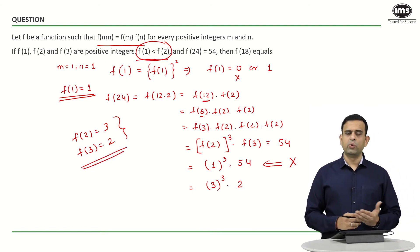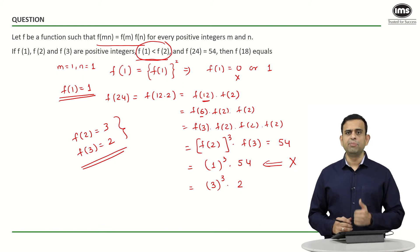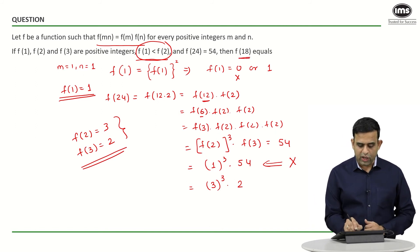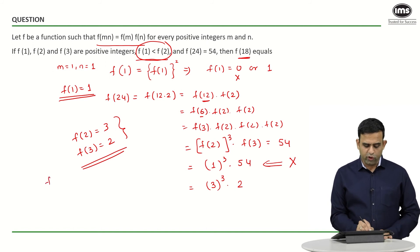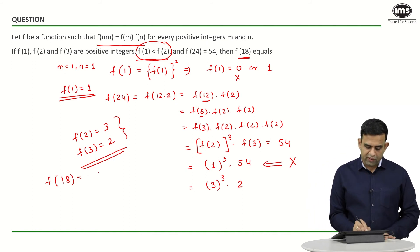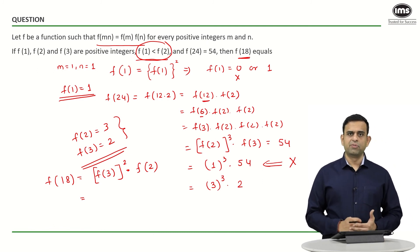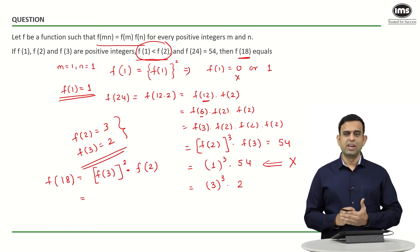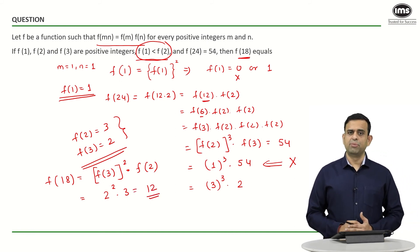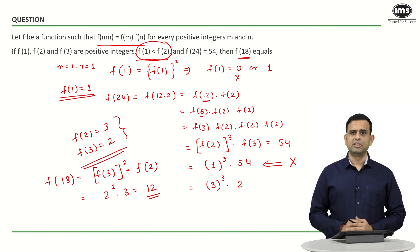Note that 24 = 2³×3¹, which matches f(2)³×f(3). Now, for f(18): since 18 = 3²×2, we get f(18) = f(3)²×f(2). Substituting the known values — f(2) = 3 and f(3) = 2 — we get 2²×3 = 4×3 = 12. So f(18) = 12.